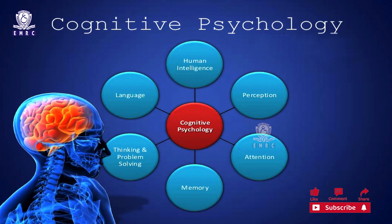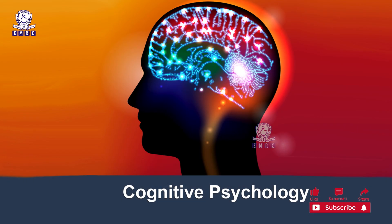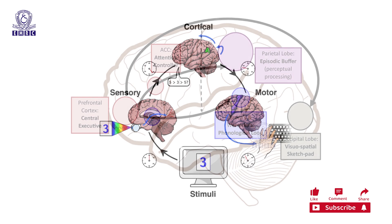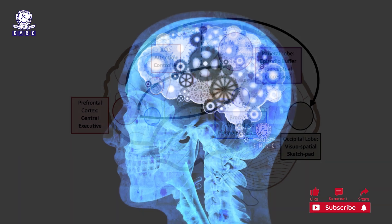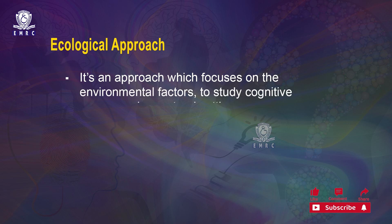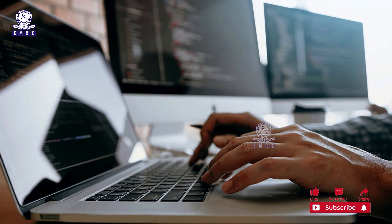In order to study these cognitive processes, psychologists conduct experiments in laboratory settings. This cognitive psychology field uses sophisticated research methods including reaction time, brain imaging, and several other advanced methods to study memory, language, and thinking of humans. Some of them also follow what is called an ecological approach, which focuses on environmental factors to study cognitive processes in a natural setting. Cognitive psychologists often collaborate with neuroscientists as well as computer scientists.